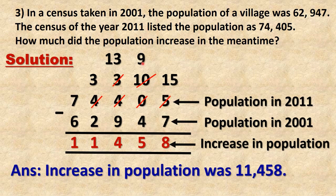Thousands place: 3 minus 2 is 1. Ten-thousands place: 7 minus 6 is 1. The number is 11,458 increase in population. The final answer is the increase in population was 11,458.